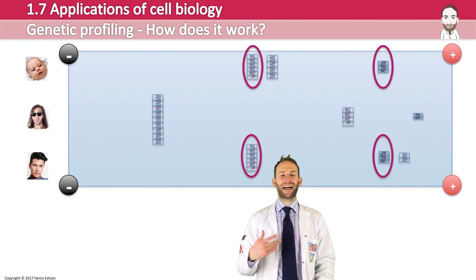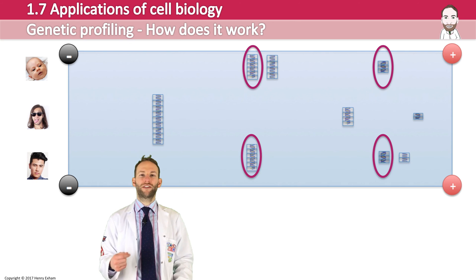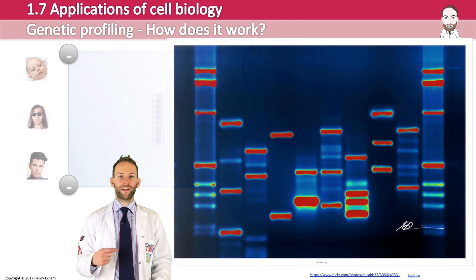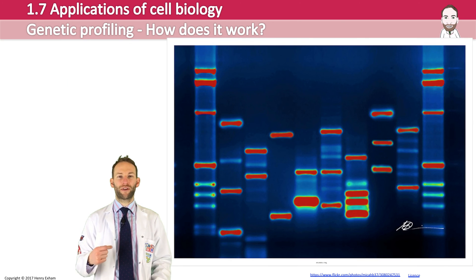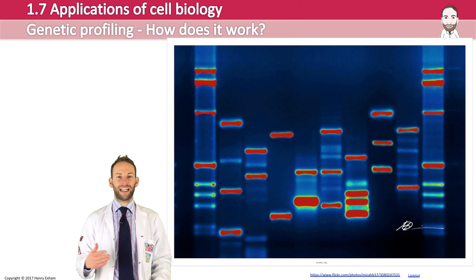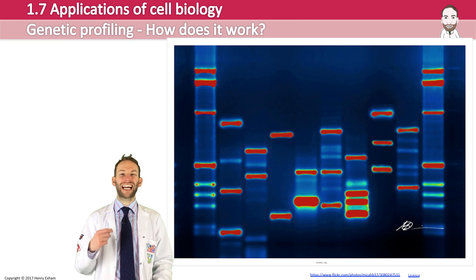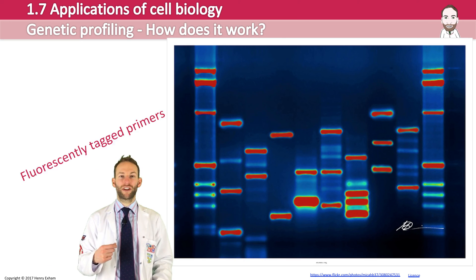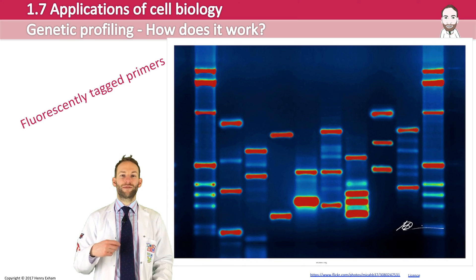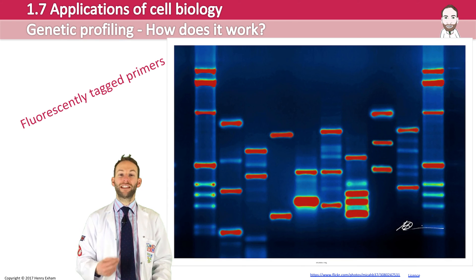How do the bands actually get made visible? If you recall back to the PCR method, you need to add primers at each stage to multiply the DNA. What you do is add special fluorescently tagged primers during PCR, so that the amplified fragments become visible in the gel.